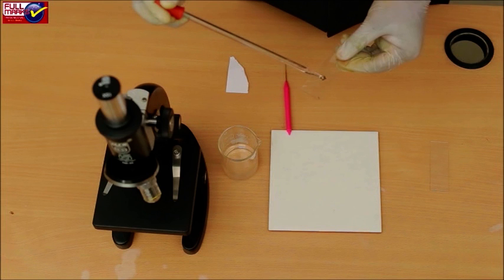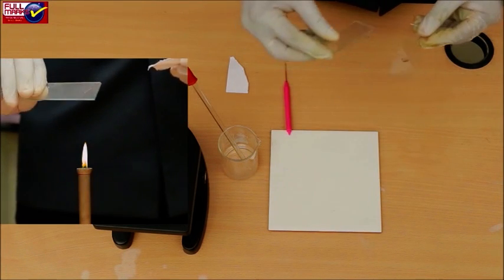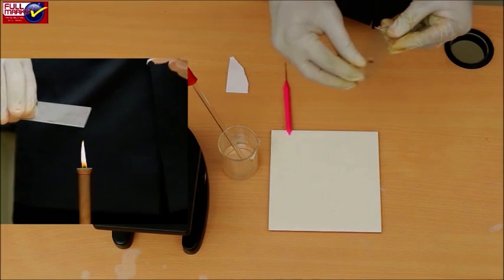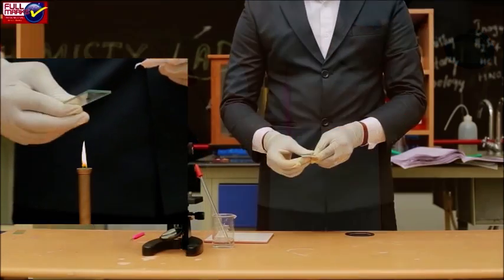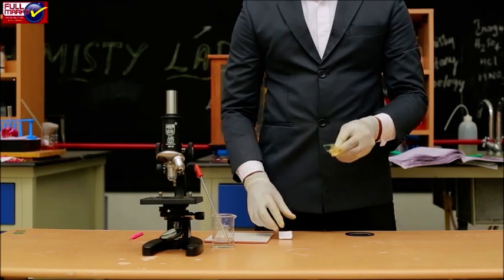Place a cover slip over them and tap it gently with a needle or pencil. Warm it slightly over the flame of the spirit lamp. Put a piece of blotting paper on the cover slip and apply uniform pressure with your thumb.